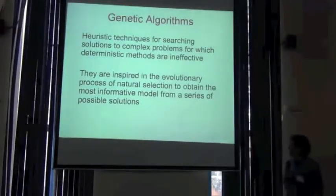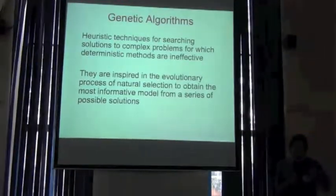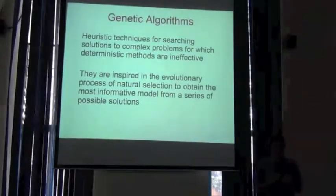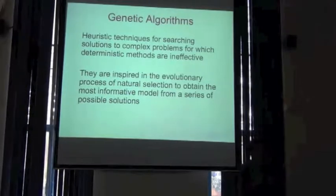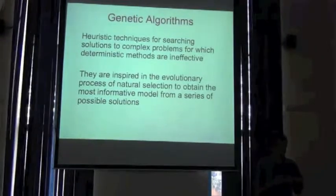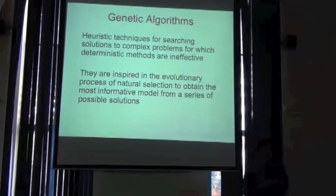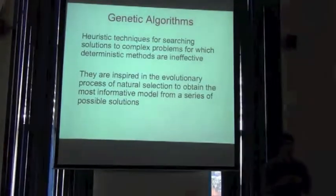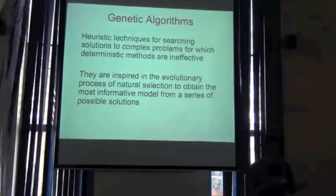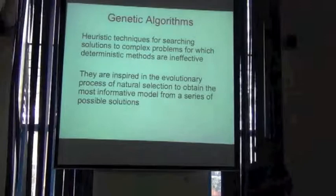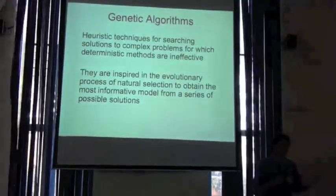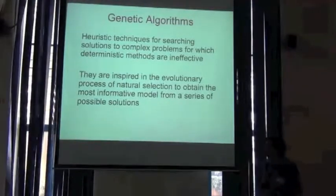The general idea of genetic algorithms is that they are heuristic, or trial-and-error, methods for finding solutions to very complex problems for which deterministic methods like traditional statistics are inefficient, especially when dealing with large amounts of data.